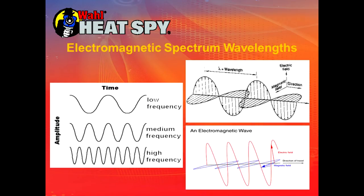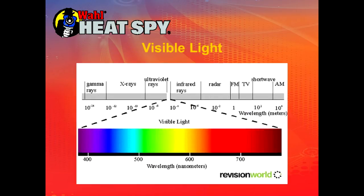We have low frequency, medium frequency, and high frequency wavelengths, and the wavelengths have both an electrical and a magnetic field. This is an overview of the spectrum, including what we can see — only a tiny amount of the electromagnetic spectrum is visible to the human eye, about 400 to 700 nanometers, or 0.4 to 0.7 microns.